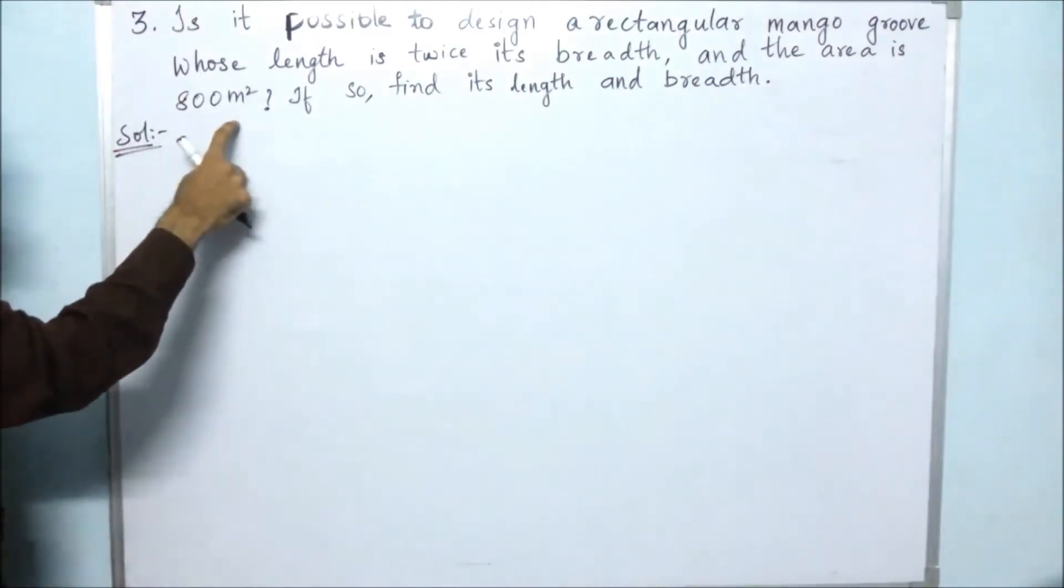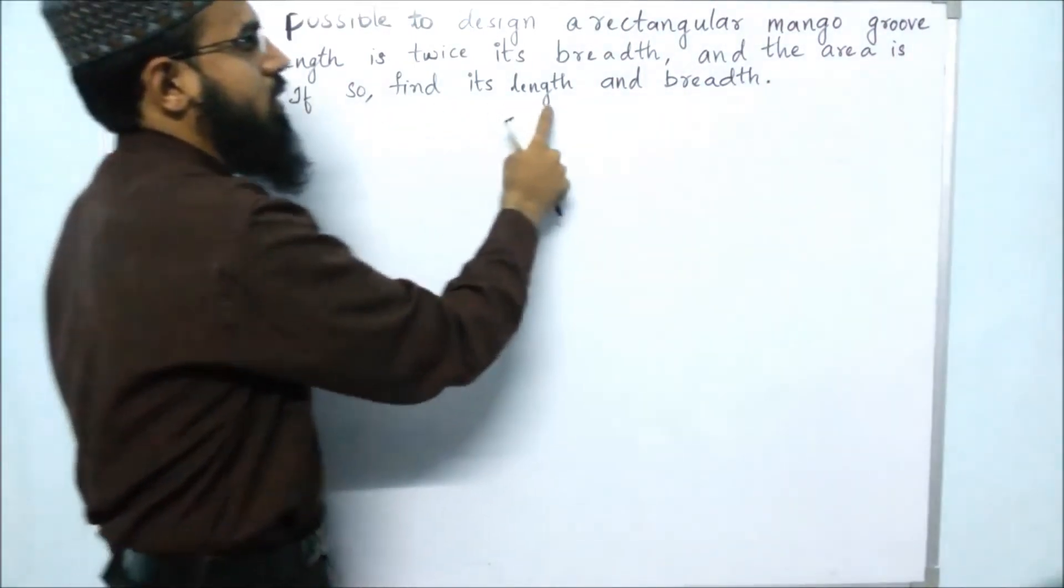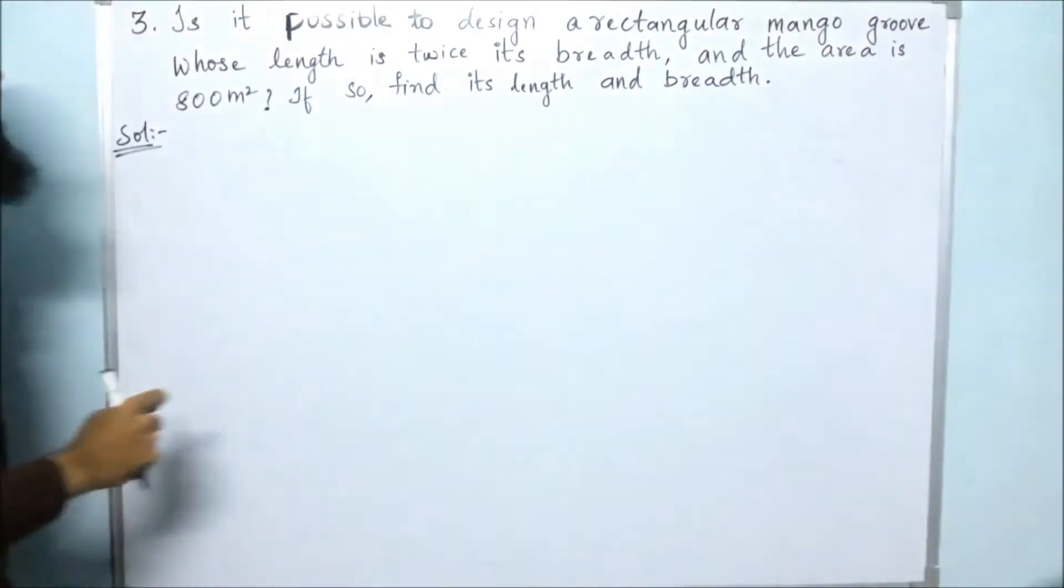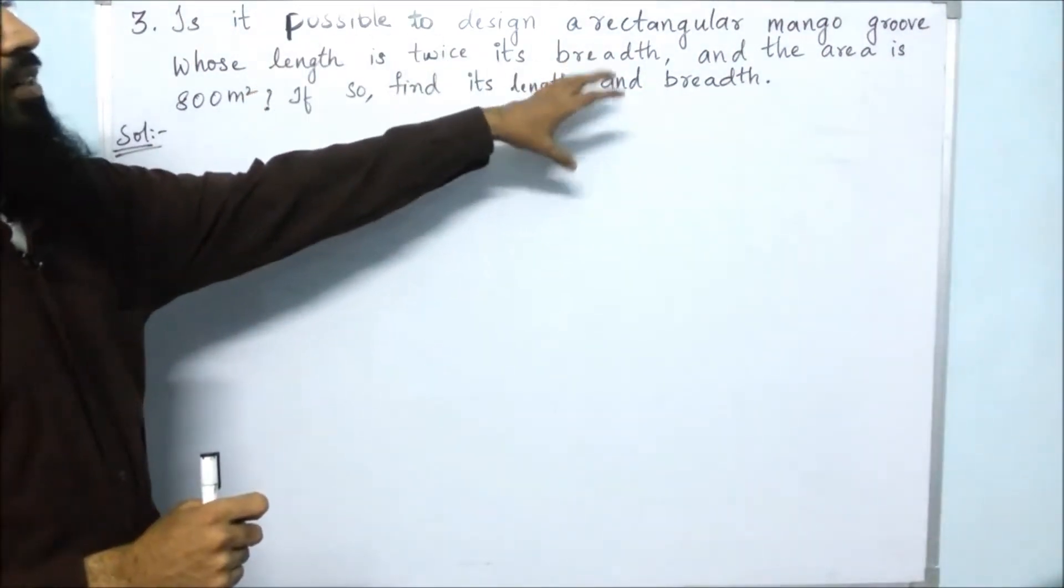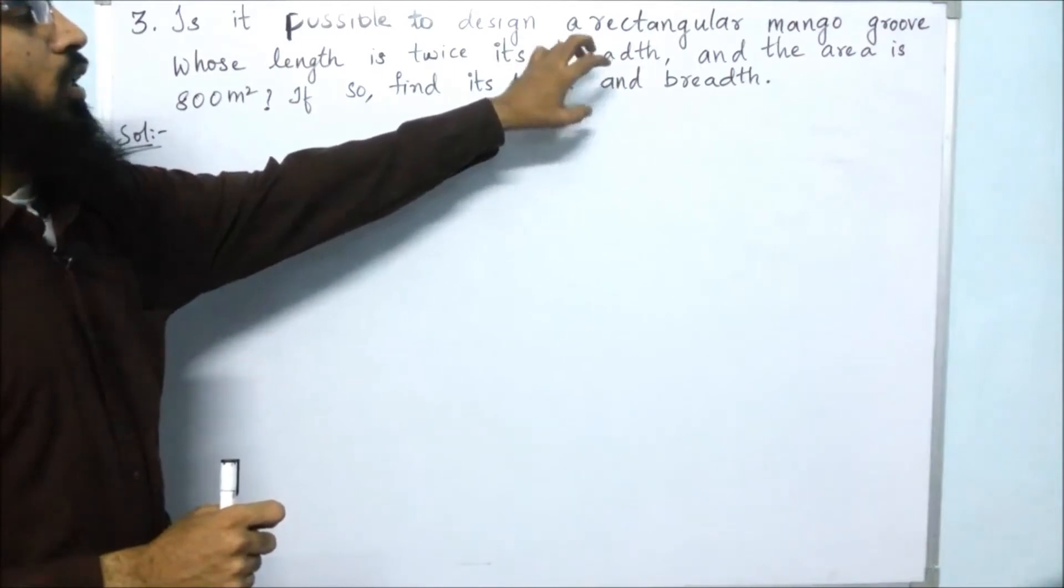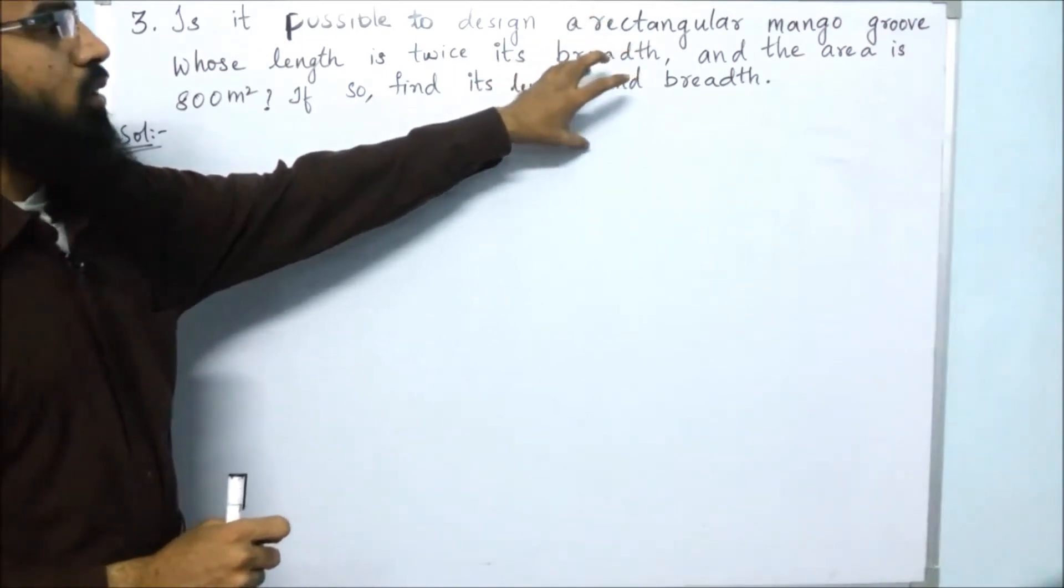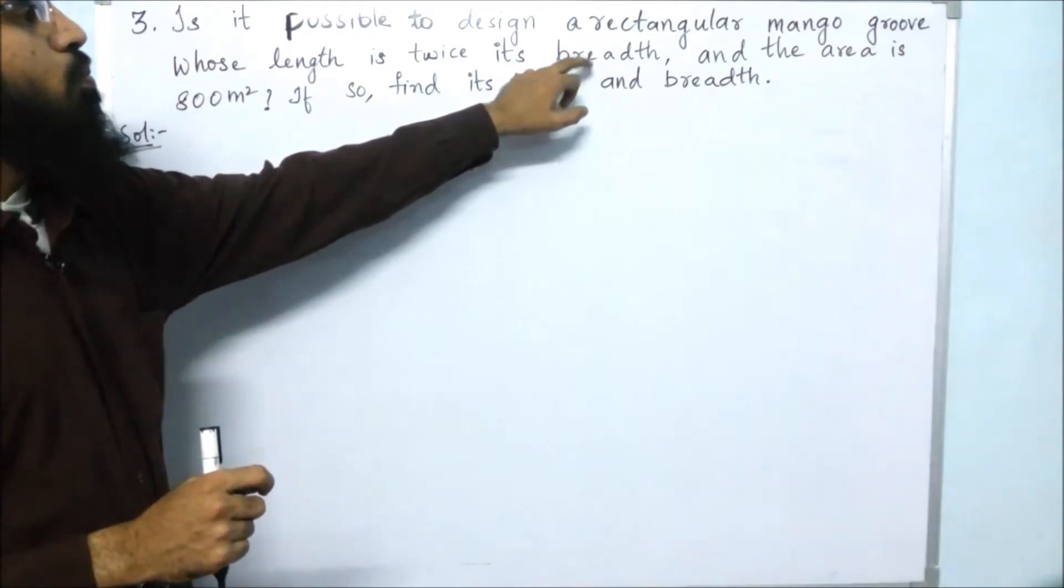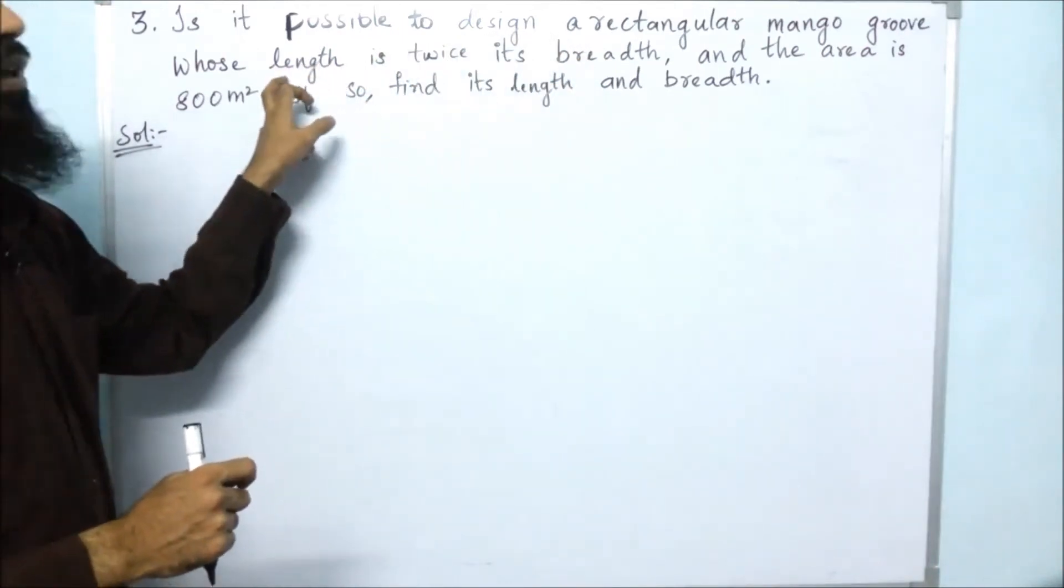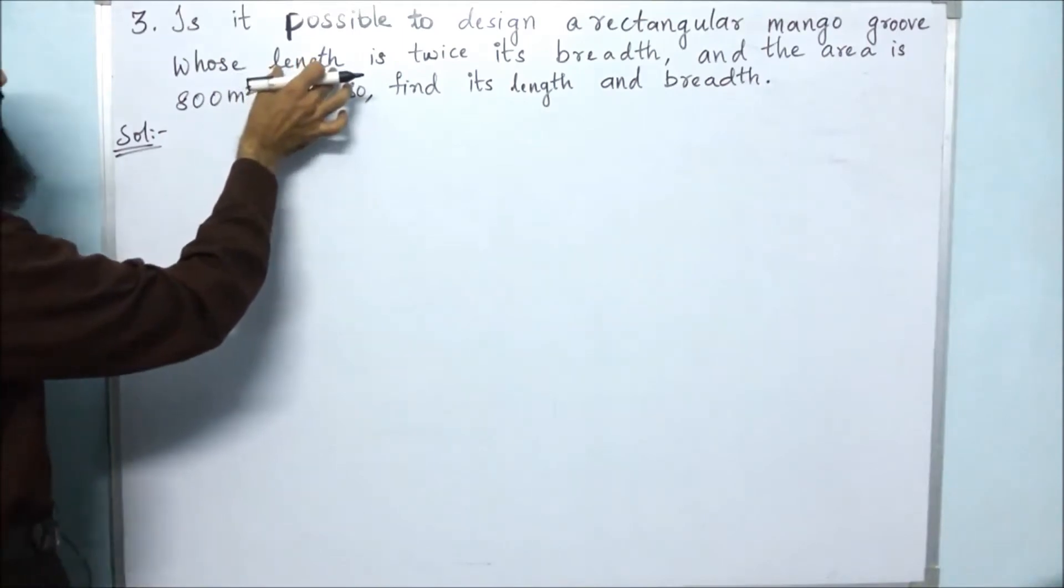They have given the relationship between length and breadth. We don't have the breadth directly, but if we find the breadth, we can make it twice to get the length. So length is directly dependent on breadth.